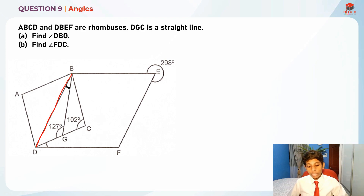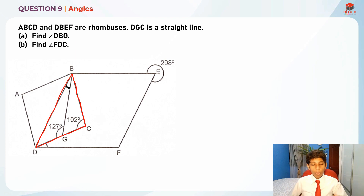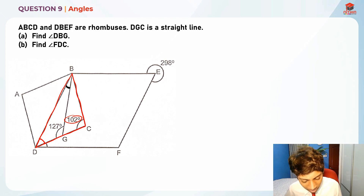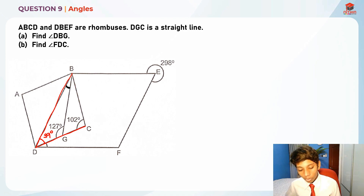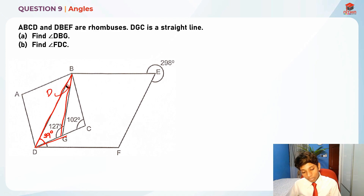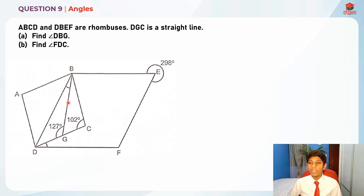Both these triangles are actually isosceles. So what we're going to do is take 180 degrees minus 102 degrees, divided by 2, in order to get this base angle. After we find that angle — which should give us 39 degrees — we are going to use the sum of angles in a triangle: 180 minus 39 minus 127, which will give us the answer for angle DBG.